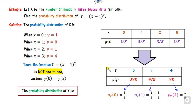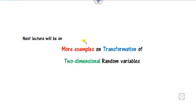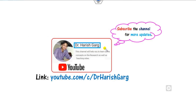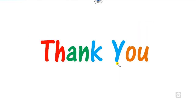This is the way you can solve the probability density function in the discrete case. We have discussed both types — type 1 (1-to-1) and type 2 (not 1-to-1) — for the discrete case. We will see more examples on transformations of two-dimensional random variables in the next class. Till then, you can follow the provided link to find various videos. Best of luck students, happy learning.